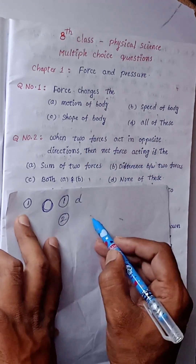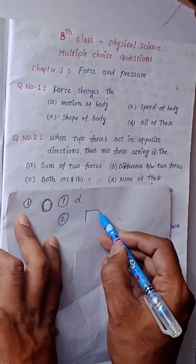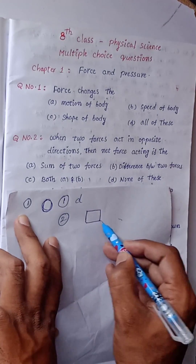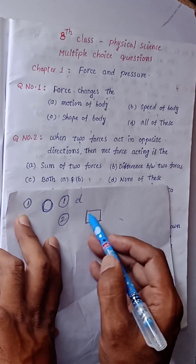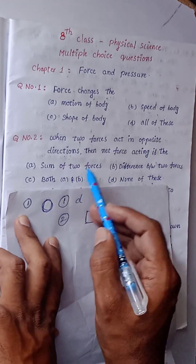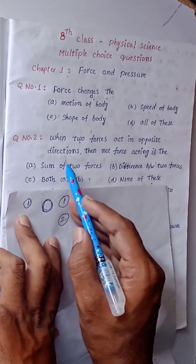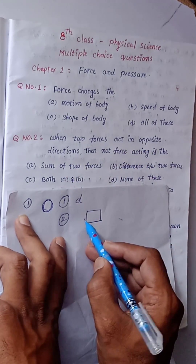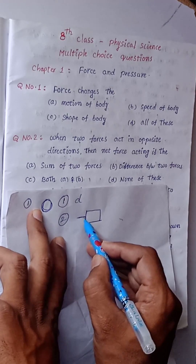When two forces act — suppose this is an object, a table. Forces are acting on the table in opposite directions.